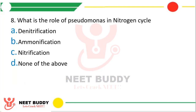Question 8: What is the role of Pseudomonas in the nitrogen cycle? Denitrification, ammonification, nitrification, or none of the above. Pseudomonas is a bacterium. The correct answer is Option A — it carries out denitrification.